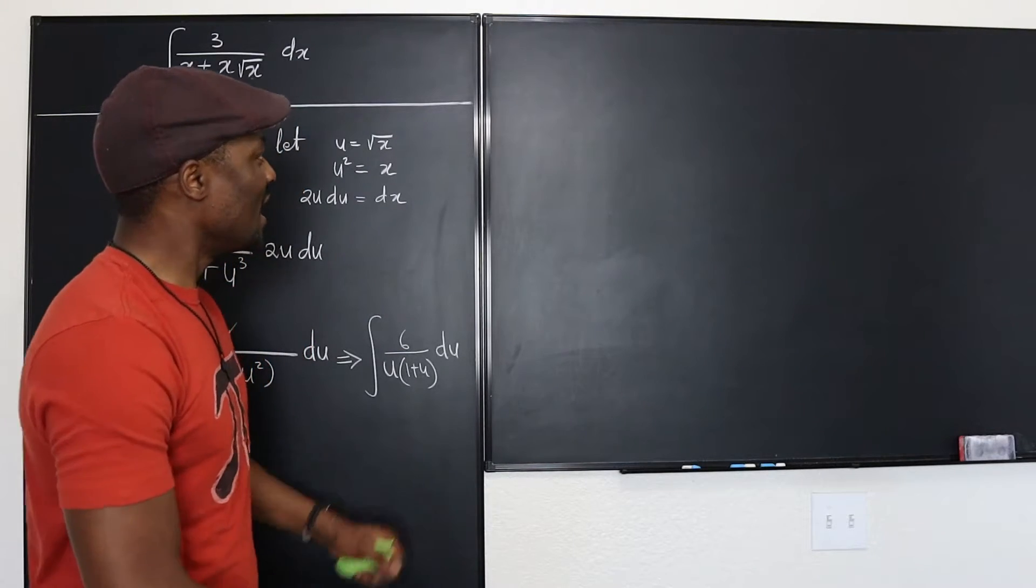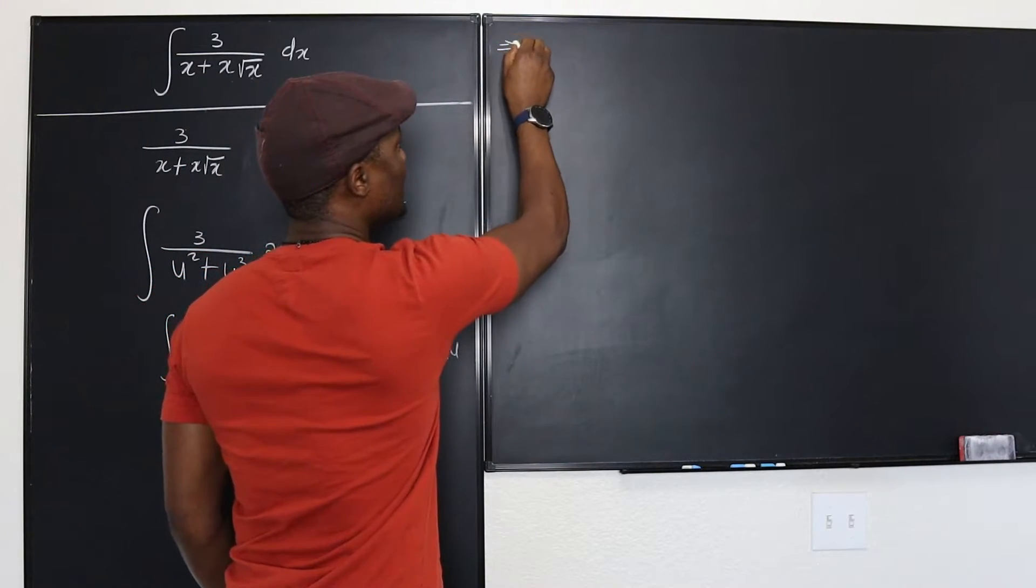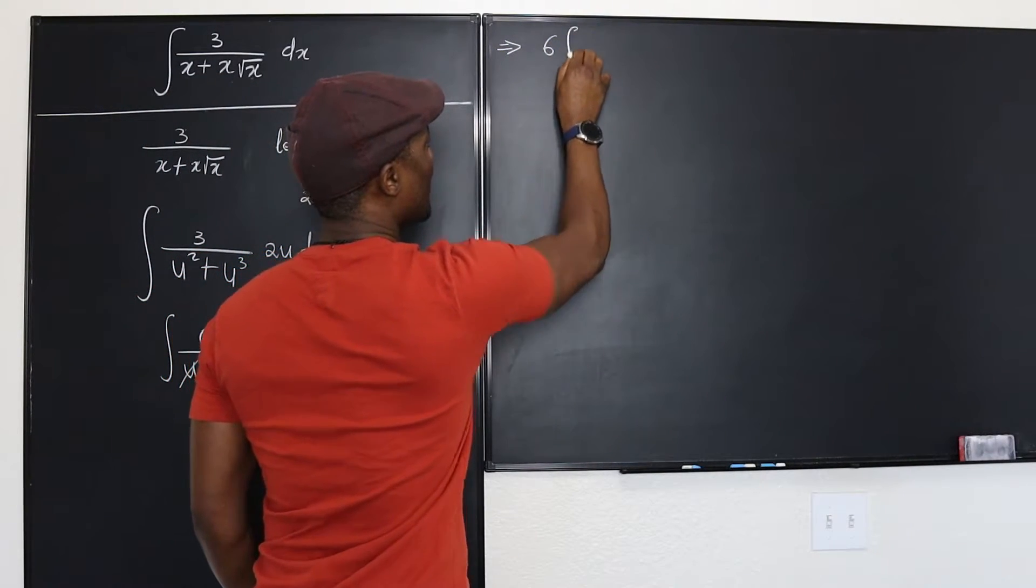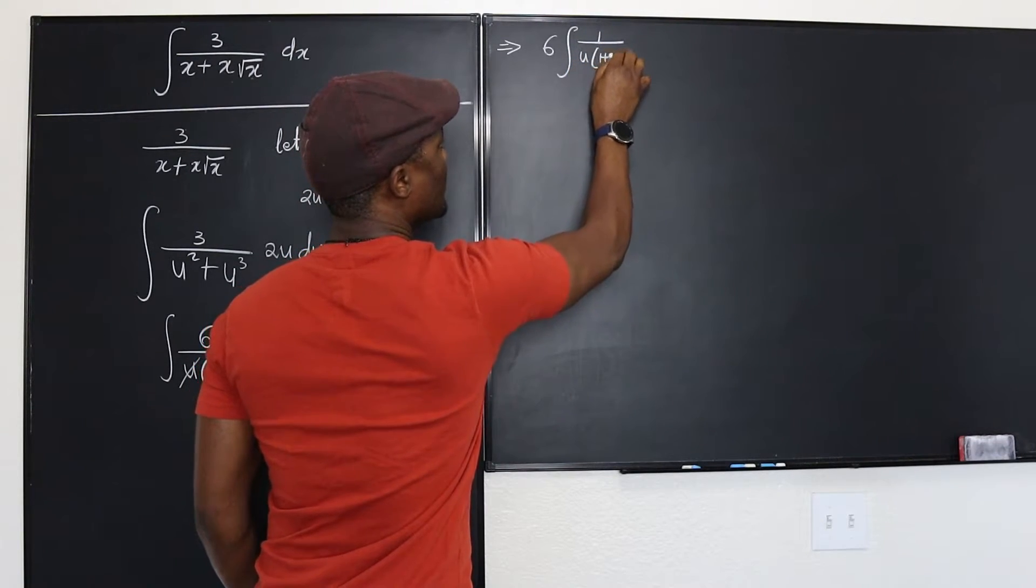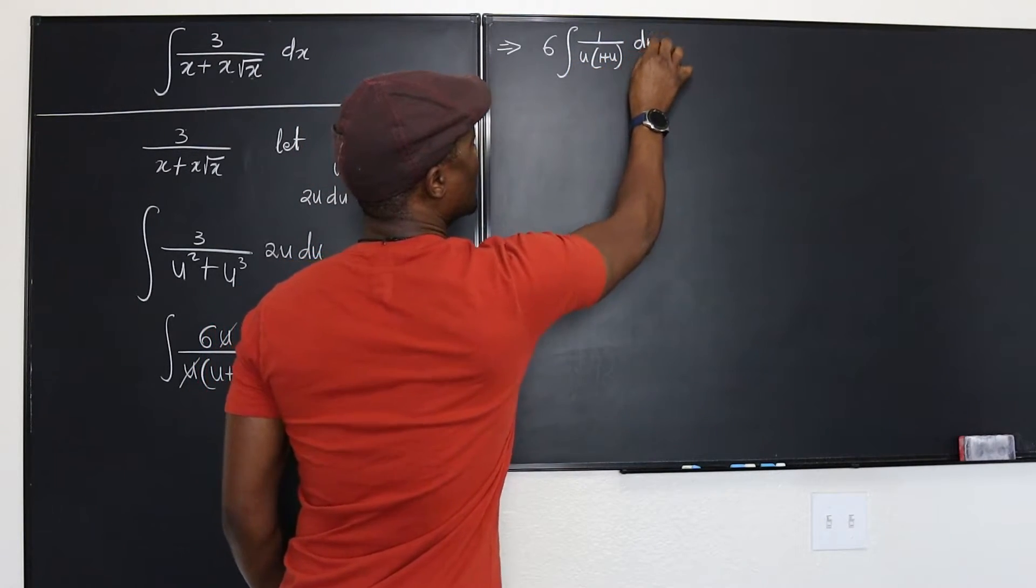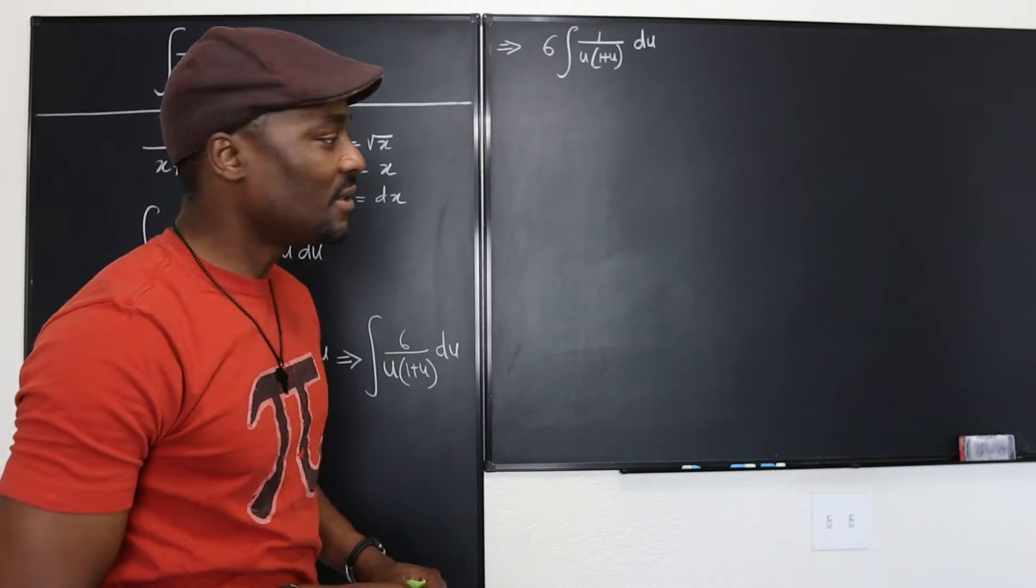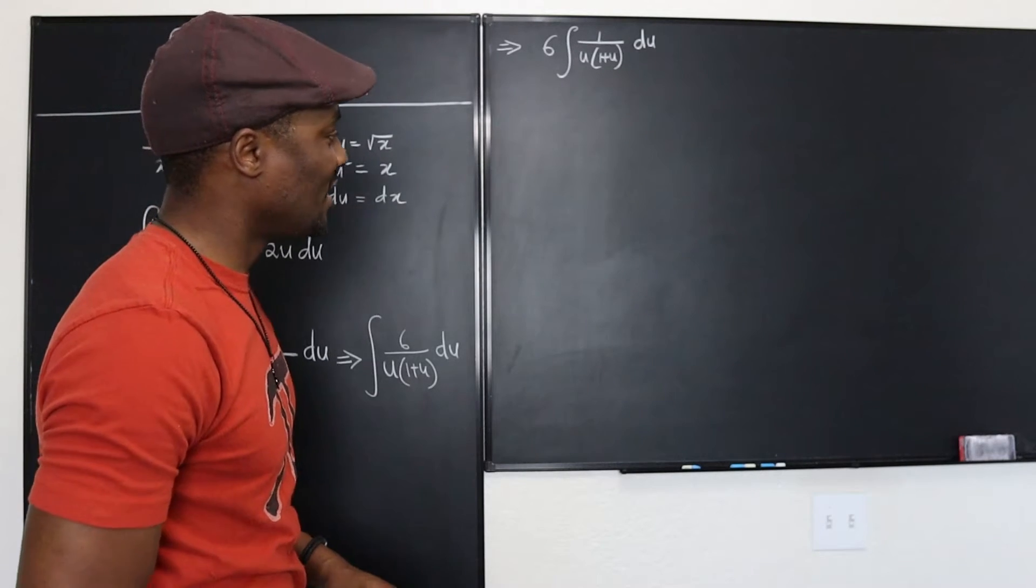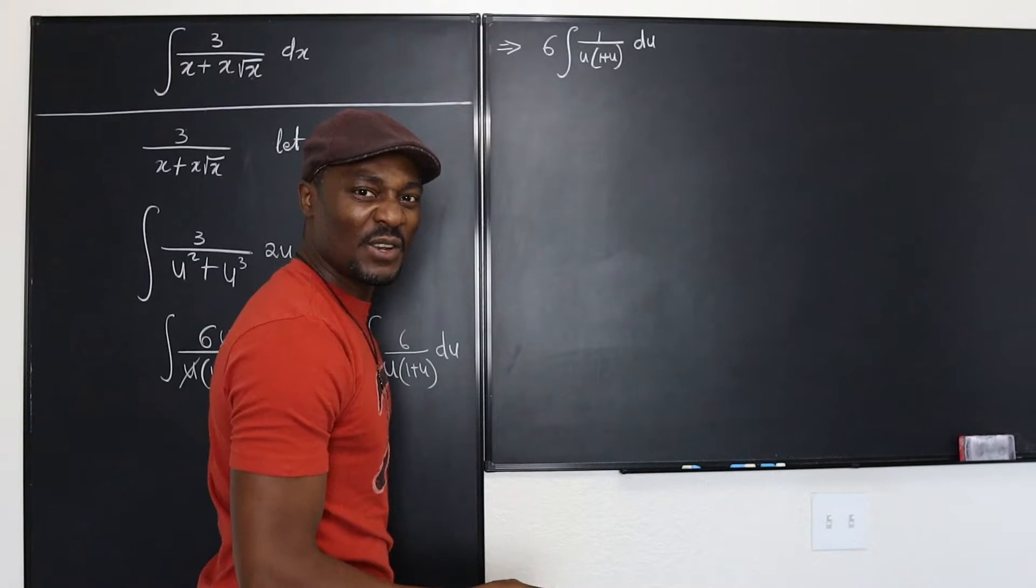So let's do that. This implies 6 integral of 1 over u into 1 plus u du. Resolving this into partial fractions, let's do some little tiny paperwork on the side. I'm going to do it here, I'm going to erase it over time.